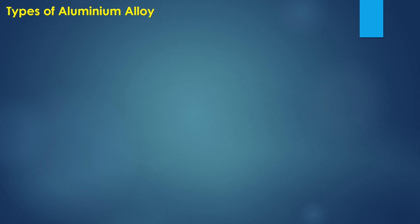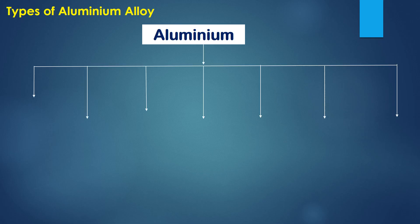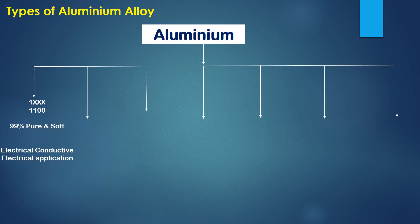Now let us understand the types of Aluminium Alloys. There are seven types available. The first is the 1000 series — it is 99% pure and soft, with good electrical conductivity, and is used in electrical applications. The second is the 2000 series, which is alloyed with copper, and its qualities include high strength and high fatigue resistance. Pistons, gears, and wheels are made from this 2000 series Aluminium alloy.